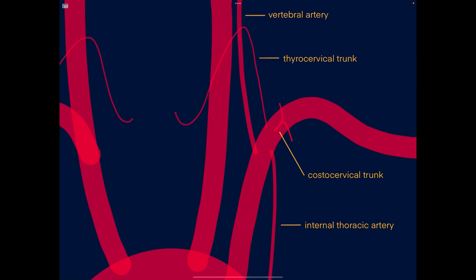The final branch of the subclavian artery is the costocervical trunk. This divides into two branches: one that goes superiorly, which is the deep cervical artery — so the deep cervical comes from the costocervical trunk while the superficial cervical comes from the thyrocervical trunk — and the branch that goes inferiorly, which is the supreme intercostal artery, supplying the intercostals for the first and second ribs.